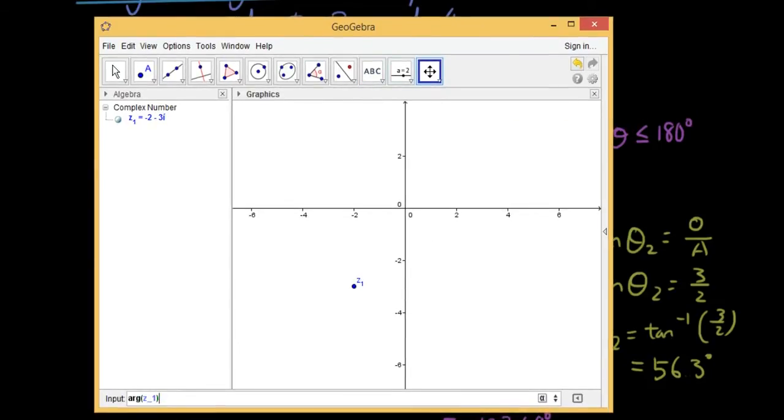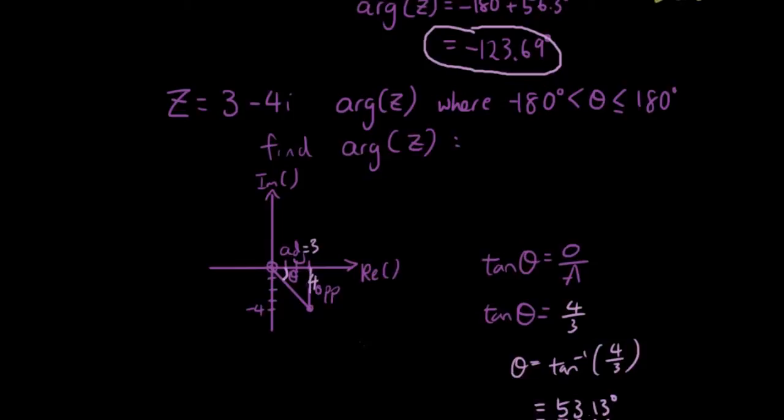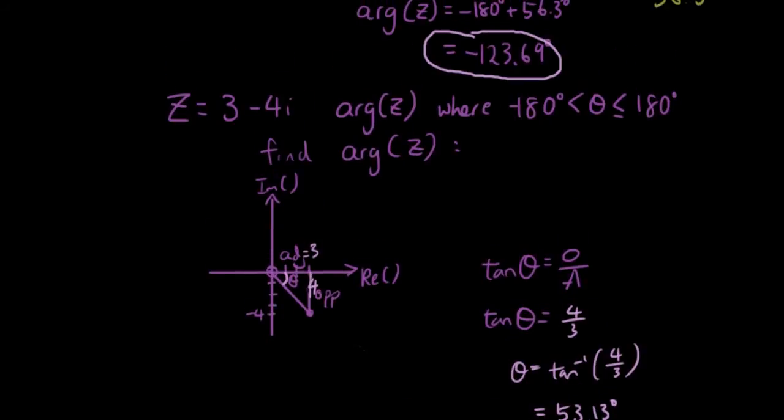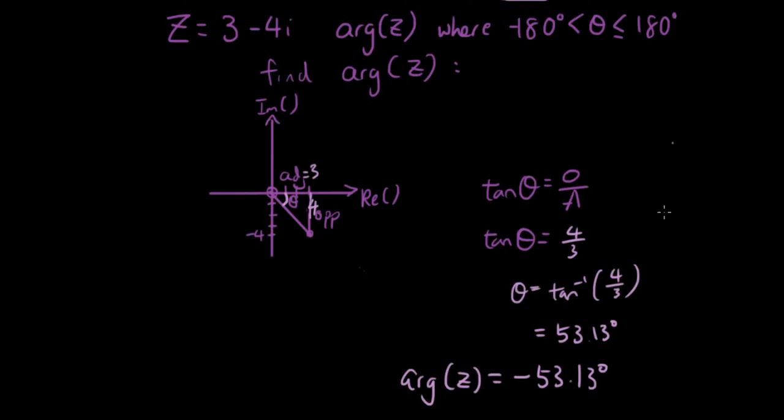So our first one is 123.69. And if you have a look at our answer, it was 123.69. And let's do our second one. So the complex number is 3 minus 4i. 3 minus 4i. And let's find the argument of z2. And it is negative 53.13, which is exactly what we found.